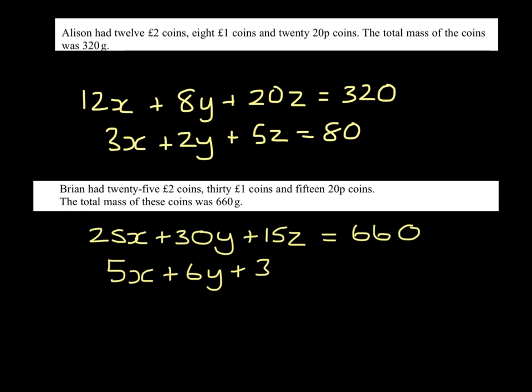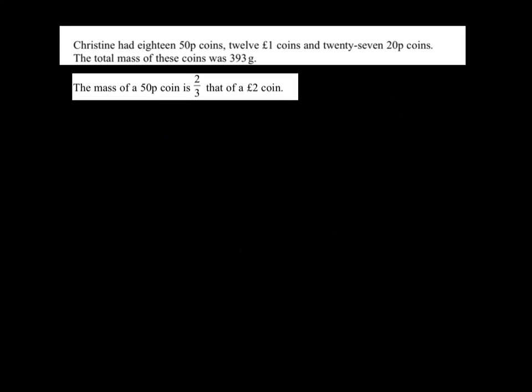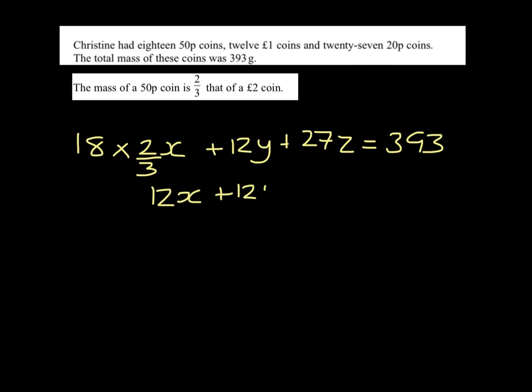So 5x, 6y, and 3z has to equal 132. This time we have 18 50p coins, and their mass is 2/3 of the £2 coin. 18 divided by 3 is 6 times 2 is 12. So 12x plus 12y plus 27z equals 393. And this time I'm going to divide everything by 3.